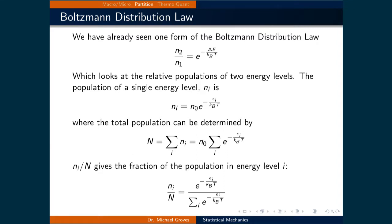Moving forward, we are now going to examine something called a partition function. First, we will re-examine the Boltzmann distribution law, which we have already used. Specifically, n2 over n1 is equal to e raised to the power of negative delta e over kb times T. This looks at the relative populations of two energy levels.